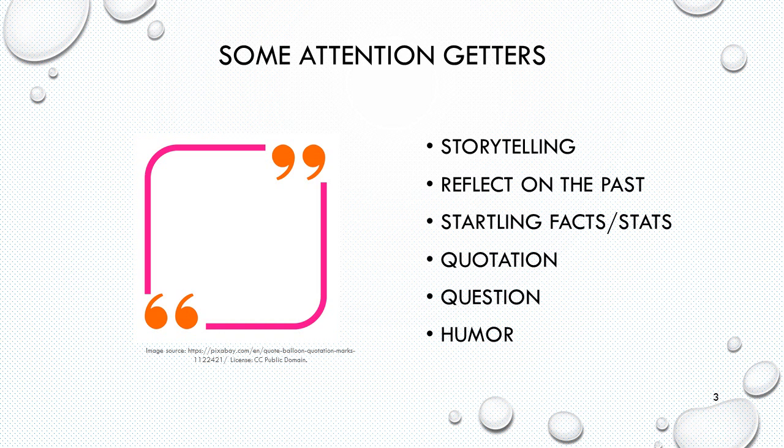Some examples of attention-getters you can use to catch the audience's attention include storytelling or doing a brief narrative, reflecting back on the past. You can use startling facts or startling statistics as mentioned in the chapter. A common one is using a quotation — something someone else said that is related to your thesis statement or the content of your speech. You can also ask the audience a question, whether for a show of hands or a rhetorical question to get them thinking about your topic.